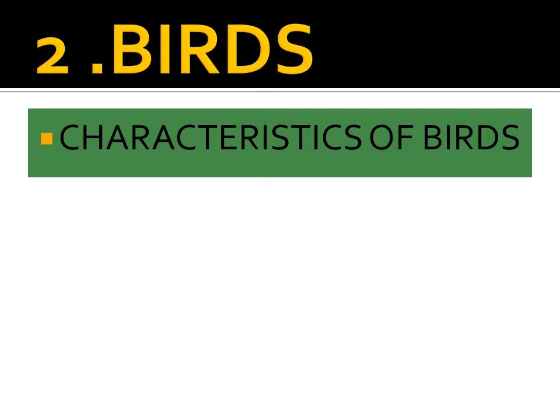Characteristics of birds. Number one: their feet are covered with scales. Number two: they are warm-blooded. When we talk about warm-blooded, we mean their body temperature is constant — it does not change. Number three: the female and the male usually mate, and thus the female will lay already fertilized eggs, so we say the eggs are fertilized internally.